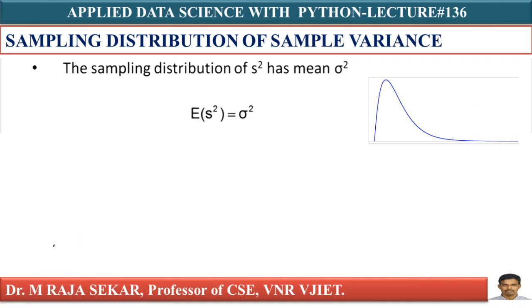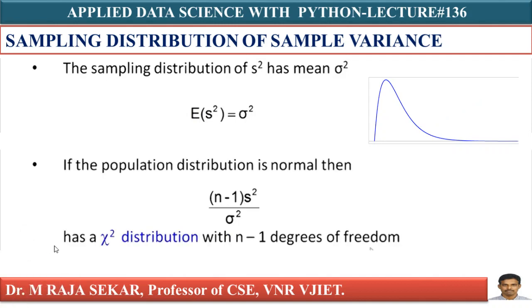If the population distribution is normal, then there is a relationship between sample variance and population variance. The relationship is: (n−1)·S²/σ² has a chi-square distribution with n−1 degrees of freedom. On the x-axis, we plot the value (n−1)·S²/σ², and this gives us the chi-square distribution curve.